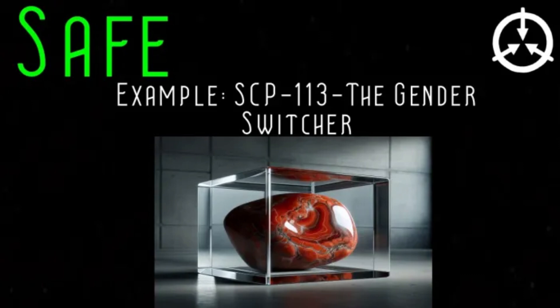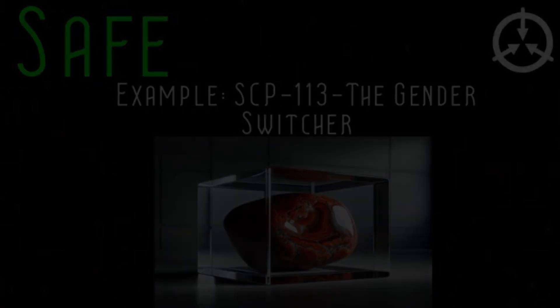Safe class SCPs are anomalies that are easily and safely contained. This is often due to the fact that the Foundation has researched the SCP well enough that containment does not require significant resources, or that the anomalies require specific and conscious activation or trigger. Classifying an SCP as Safe, however, does not mean that handling the SCP will not make it pose a threat.